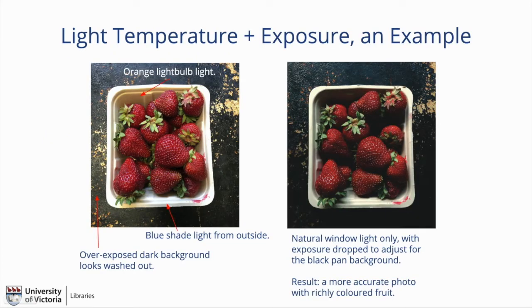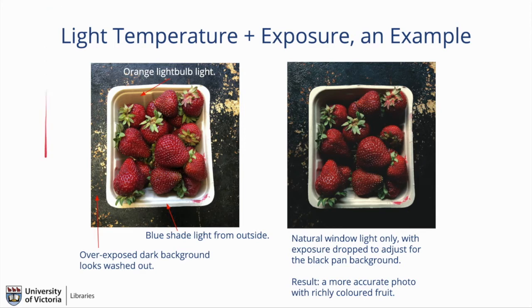This is an example of mixed lighting versus single source lighting. In this example, the overhead light in the kitchen is turned on — you can see an orange tinge from that overhead light. There's also a window shining in with shade light, and you can see blue from that shade light. The tray of strawberries is sitting on a large dark baking sheet, so the sensor sees all this darkness and thinks it's in a dark space, and bumps up the light — overexposing things.